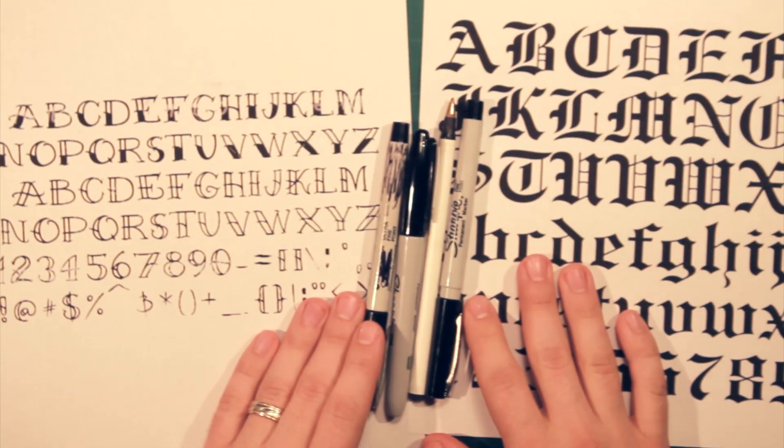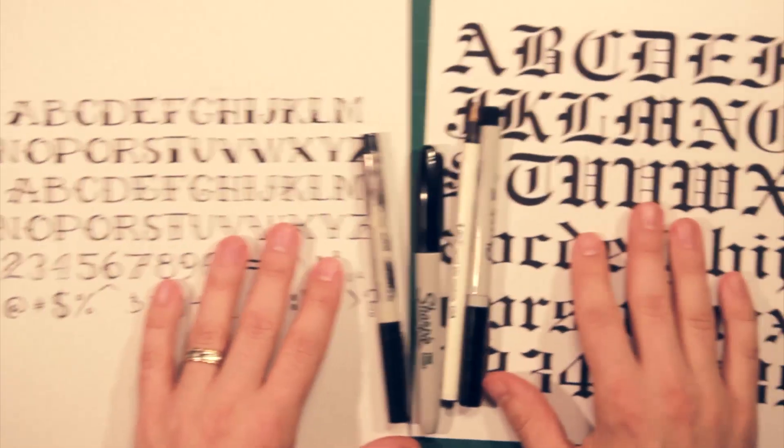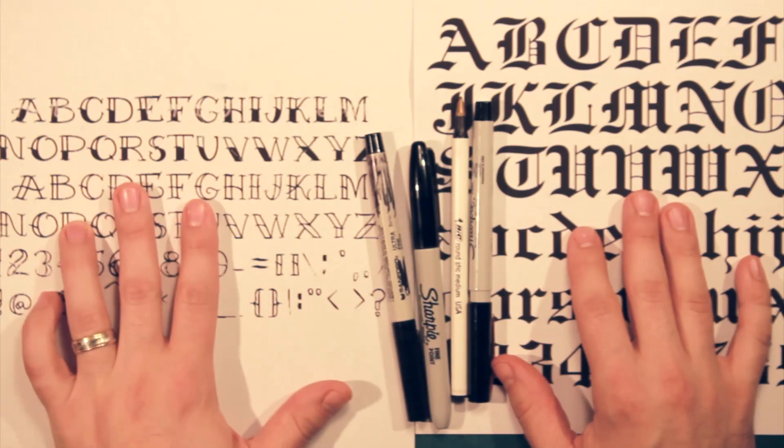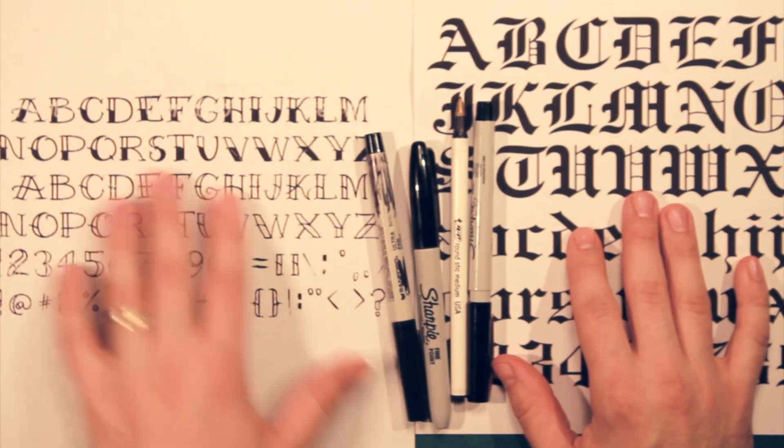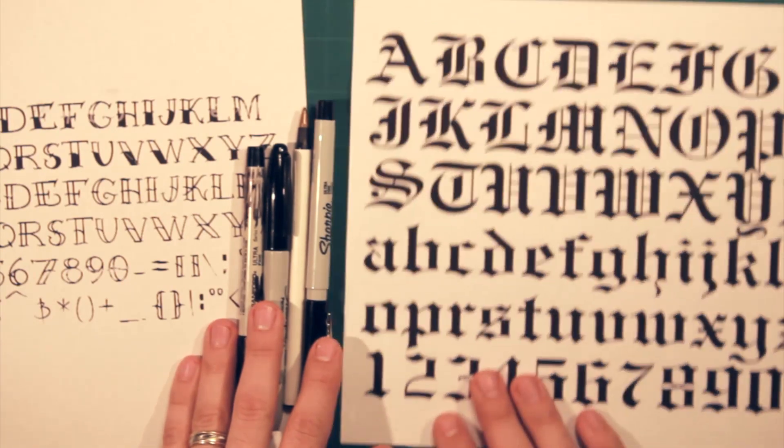If you just Google tattoo fonts, tattoo lettering, and hit images, you'll find all of these. These are just two pretty standard types, like old school 1950s looking tattoo letters, and the hardcore gothic old English looking one, uppercase, lowercase.